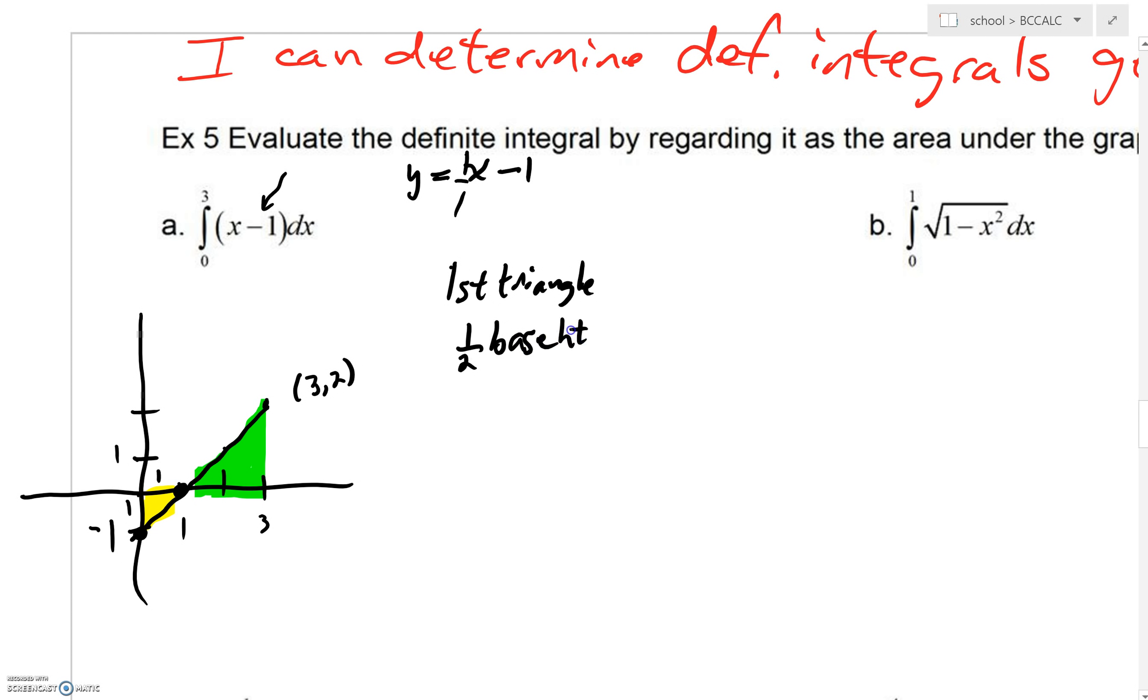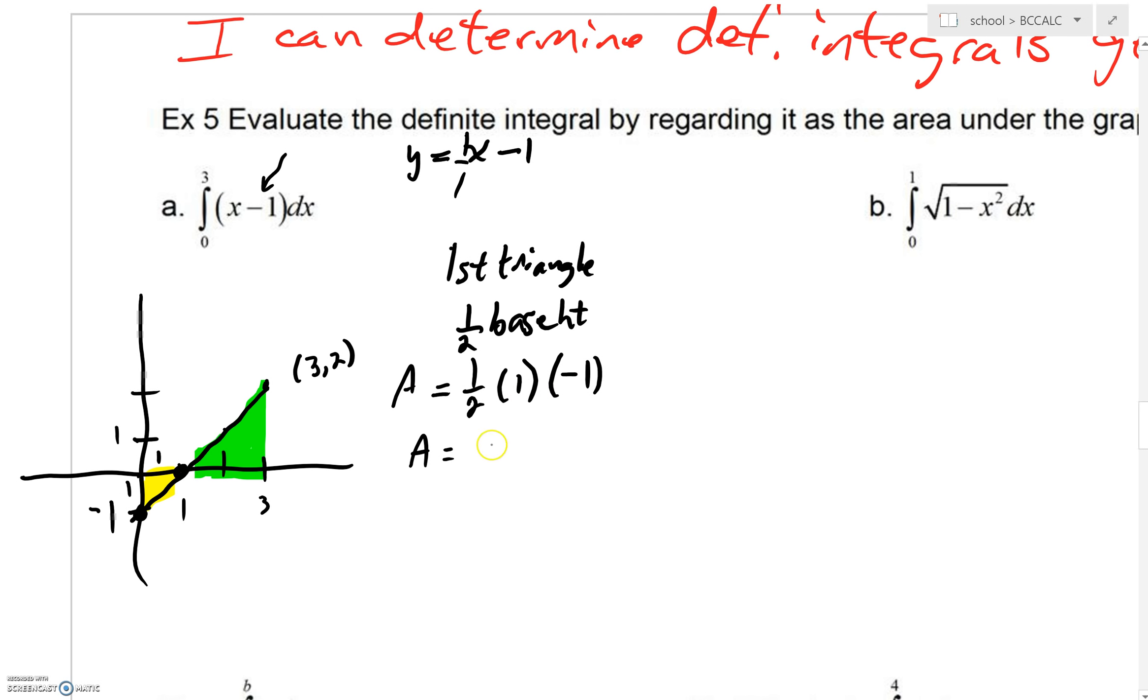For my first triangle, that's underneath the x-axis, so that's going to be negative area. So it's one-half base times height. Technically we could say that our base is 1, our height actually would be -1, our y value would be -1. So it doesn't take you too long to see that's going to just work out to -1/2.